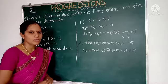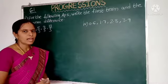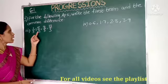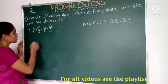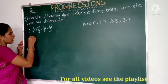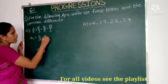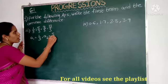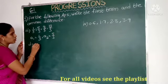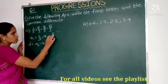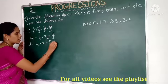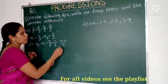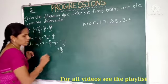Next, see the third question. The terms given are 1/3, 5/3, 9/3, 13/3. Here four terms are there. So A1 equals 1/3 and A2 equals 5/3. The common difference D equals A2 minus A1, so 5/3 minus 1/3. The LCM is common — 3. Write the same numbers in the denominator: 5 minus 1 by 3 equals 4/3.